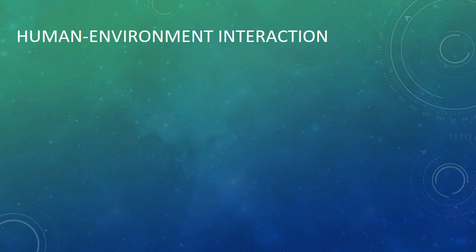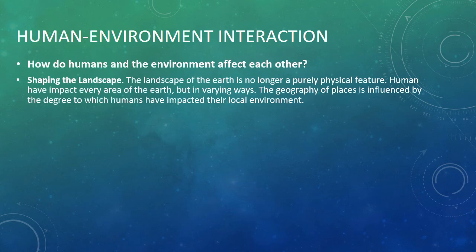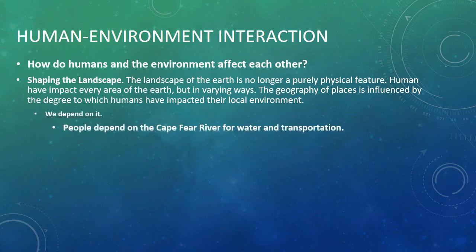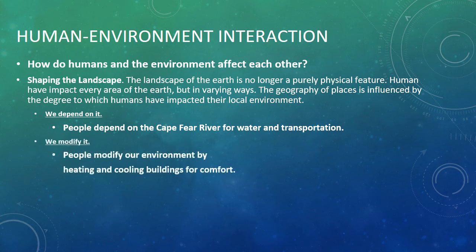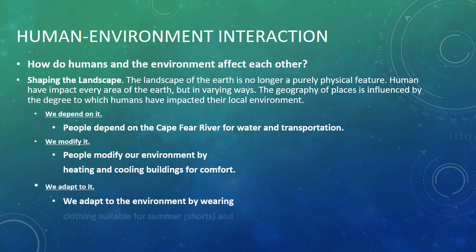Human-environment interaction asks: how do humans and the environment affect each other? The landscape of the earth is no longer purely physical — humans have impacted every area of the earth, though in varying ways. We depend on it — for example, people depend on the Cape Fear River for water and transportation. We modify it — people modify environments by heating and cooling buildings for comfort. We adapt to it — by wearing clothing suitable for different seasons and weather conditions.